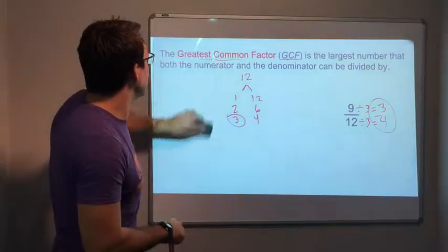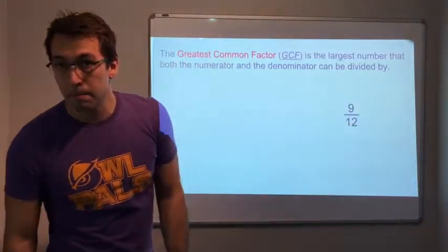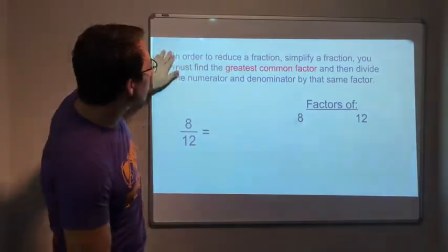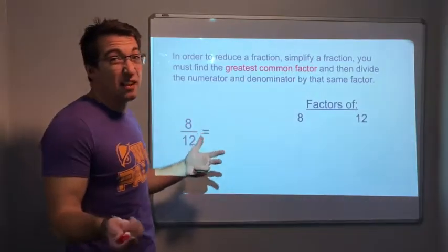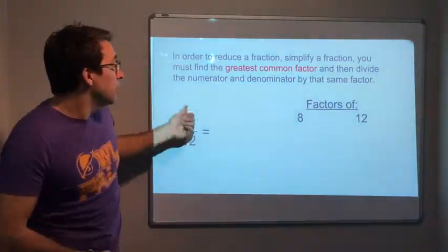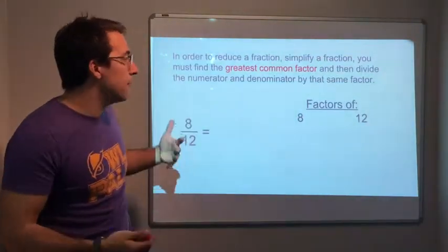So GCF, big deal. In order to reduce a fraction, simplify a fraction, you must find the GCF and then divide by it. The numerator and the denominator, divide the numerator and the denominator by that same factor.